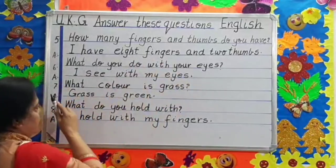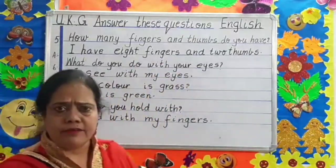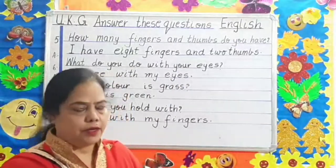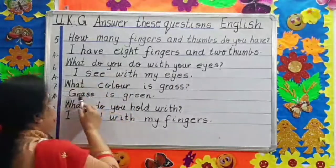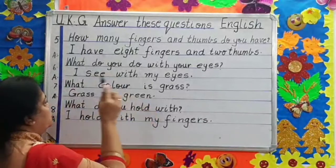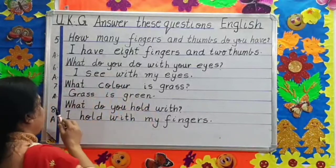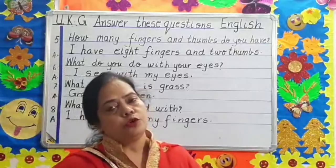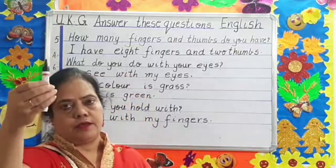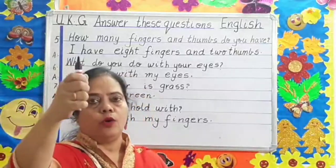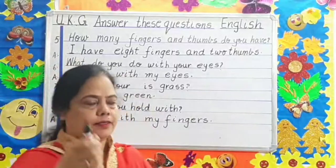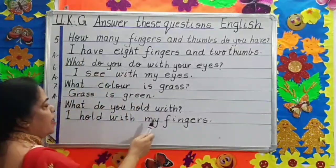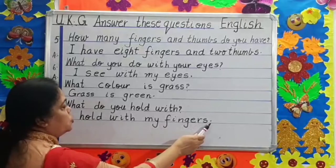Question number seven. What color is grass, children? Grass is green. Full stop. Question number eight. What do you hold with? What do you hold with, children? I hold with my fingers. Full stop.